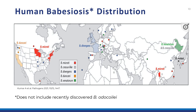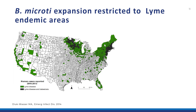Human Babesia pathogens are primarily transmitted by Ixodes ticks. As these ticks expand their ranges, it follows that cases of Babesiosis will be seen in more locales. However, it appears that Babesia expansion is restricted to those areas where Lyme disease is already present. Recall that Ixodes ticks in the U.S. are also capable of transmitting Borrelia burgdorferi, the agent of Lyme disease.